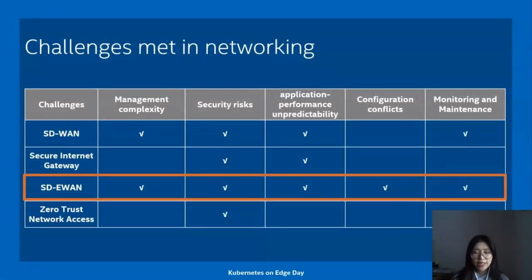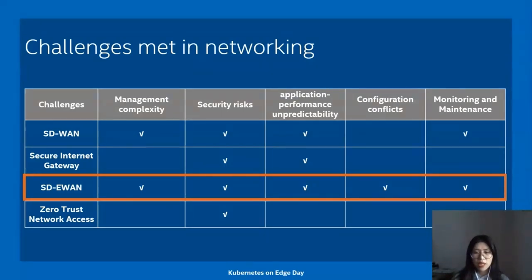Here are several challenges we may meet in networking. First, management complexity: since applications are now distributed in different networks, it brings huge problems for management. Second, security risks: data are now flowing on different lanes, so there could be more chances to face security threats such as data breach or data loss.